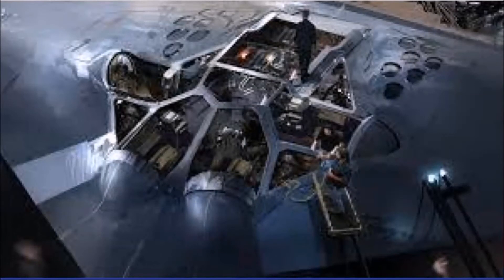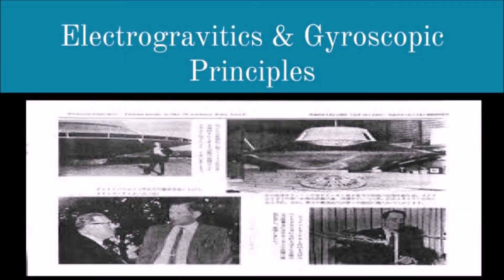Here's another picture: TR-3B. Stood right under this craft, right under it, in the field. Time slowed down. Everything was slow. Another picture here. This is all electrogravitics and gyroscopic principles.